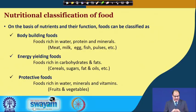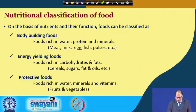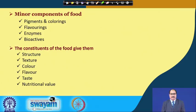Foods rich in water, protein and minerals are generally termed body building foods, whereas foods rich in carbohydrates and fats are called energy yielding foods. Foods rich in water, minerals and vitamins such as fruits and vegetables are termed protective foods. Apart from the 6 major nutrients, there are also certain minor components present in food. These minor components include pigments and colorings, flavorings, enzymes and bioactives.